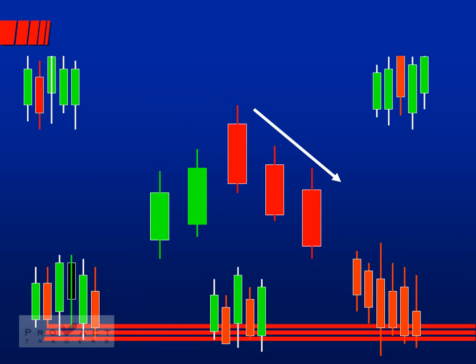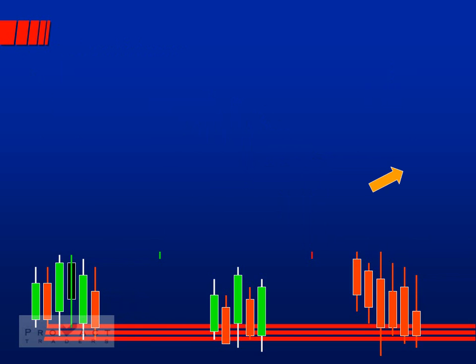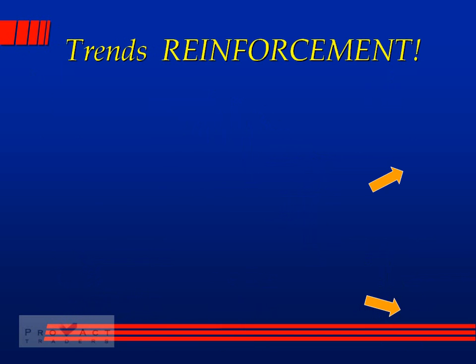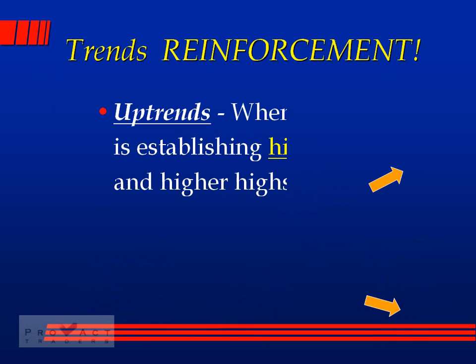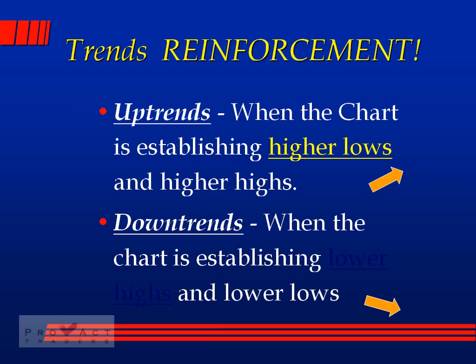To reinforce: an uptrend is when the chart is establishing higher lows and higher highs. A downtrend is when the chart is establishing lower highs and lower lows.